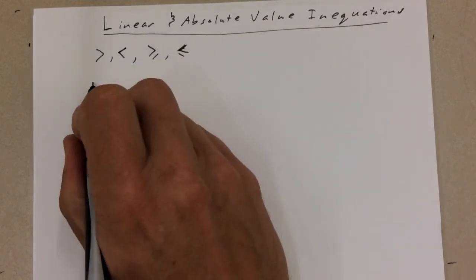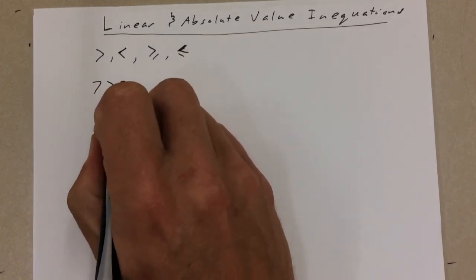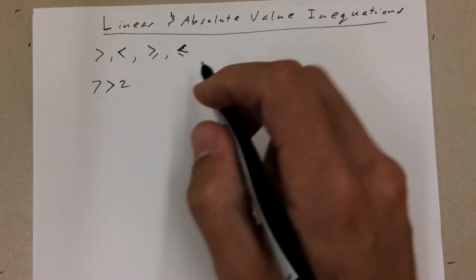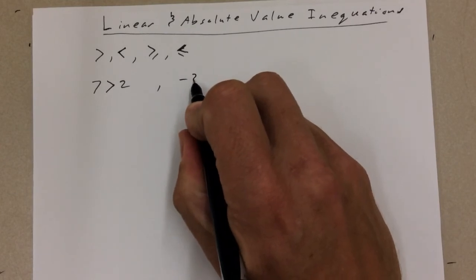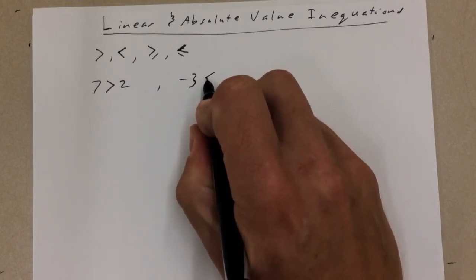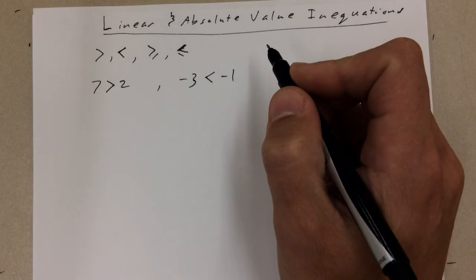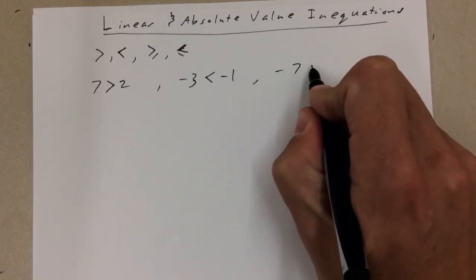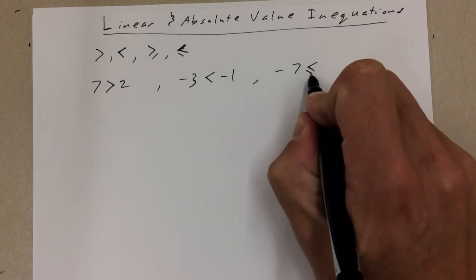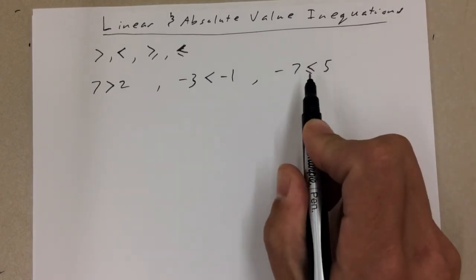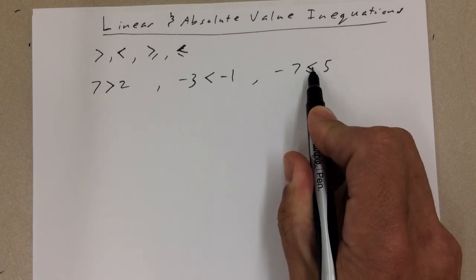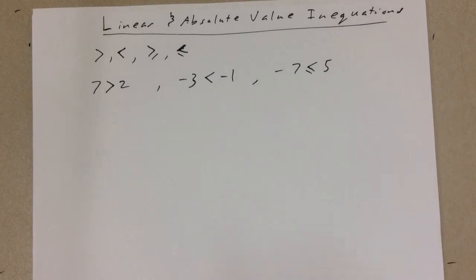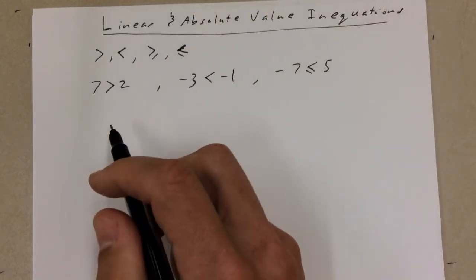Statements like '7 is greater than 2' is a true statement. And something like 'negative 3 is less than negative 1' is also a true statement. And so is 'negative 7 is less than or equal to 5' — it satisfies one of the conditions, that it's less than. So negative 7 is less than 5; it's not equal to, but that's okay. These are just true statements.